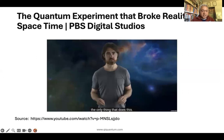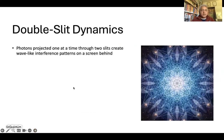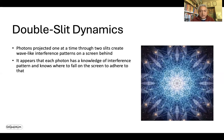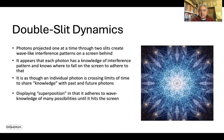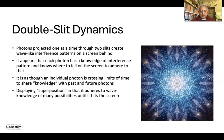So let's summarize some key points from this double slit experiment. Photons projected one at a time through two slits create wave-like interference patterns on the screen behind — this is counterintuitive. We generally expect that two interacting photons could create an interference pattern, but here the astounding thing is that even when photons are sent one at a time, it still results in a wave-like interference pattern. It appears that each photon has knowledge of the interference pattern and knows where to fall on the screen. It's as though an individual photon is crossing the limits of time to share knowledge with past and future photons, displaying superposition in that it adheres to wave knowledge of many possibilities until it hits the screen, and also displaying implicit entanglement by sharing that knowledge with many different photons that all end up in different places.